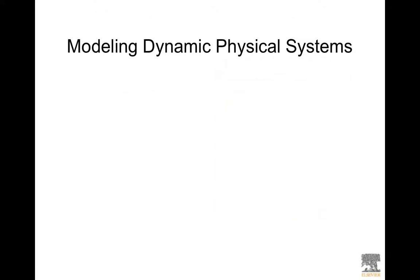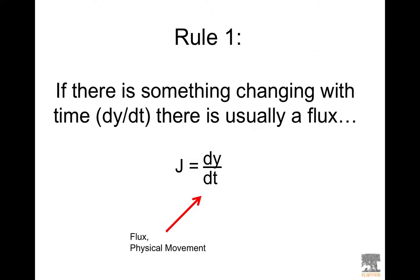When we're modeling dynamic physical systems there are some pretty simple basic rules. The first rule is if there's something changing with time there is usually a flux. Makes sense. If there's something changing with time there has to be something changing with time. So in this case we have J which equals dy/dt and the dy/dt is the flux or the physical movement of something.